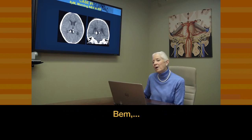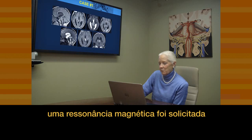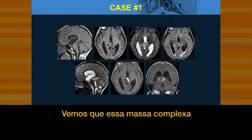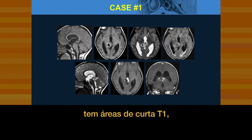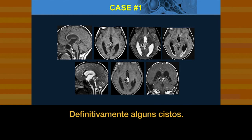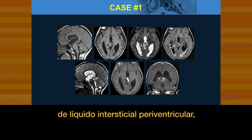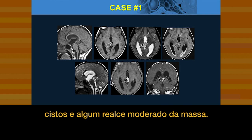What is this thing? An MR scan was ordered, and here are some representative images. We see that this complex appearing mass has areas of short T1 in it as well as calcification, and definitely some cysts. With the FLAIR scan, we can see the obstructive hydrocephalus and the periventricular accumulation of interstitial fluid, cysts, and some moderate enhancement of the mass.